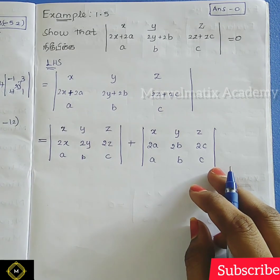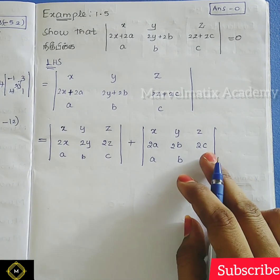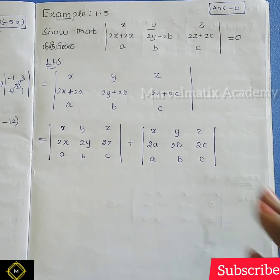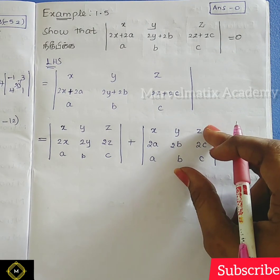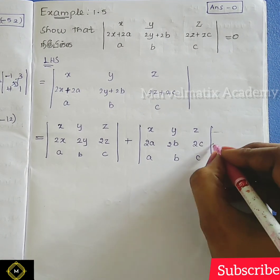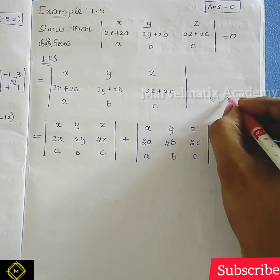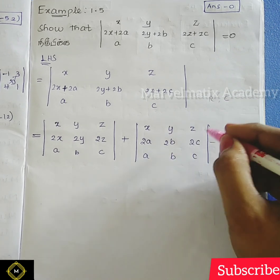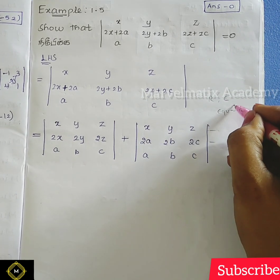So you can check the properties. This is the condition — what is the addition? One determinant, one matrix, with two rows equal, two columns equal. When two rows or columns are equal or proportional, the determinant value is zero.